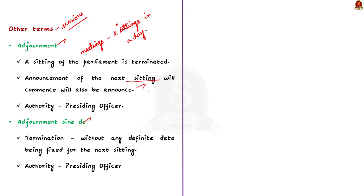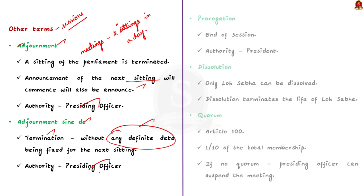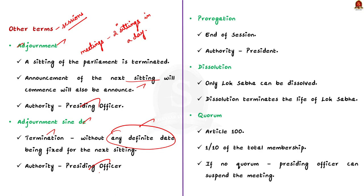Adjournment sine die refers to the termination of a sitting of the house without any definite date being fixed for the next sitting. Know that the power of both adjournment and adjournment sine die lies with the presiding officer of the house. Prorogation refers to the termination of the session of the house by an order made by the President. Prorogation is not done by the presiding officer but by the President of India.